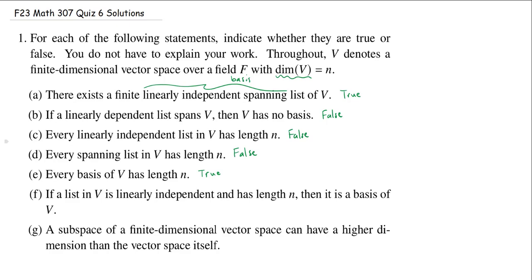Our sixth statement: if a list in V is linearly independent and has length N, then it is a basis of V. This is actually one of the problems from a previous quiz, and this is a true statement. Because if I have a linearly independent list, then I can extend it to a basis. But a basis will have length N, and this list already has length N. So no extension is needed. It must already be a basis. This is a true statement.